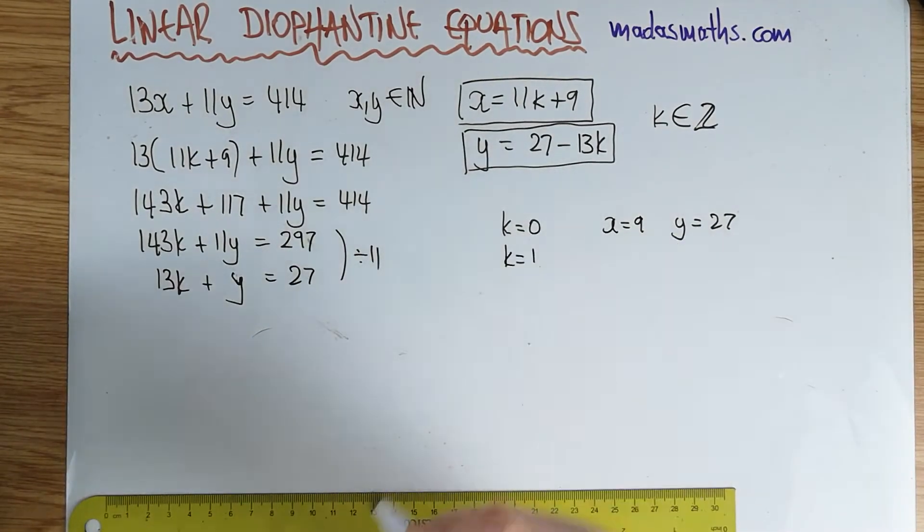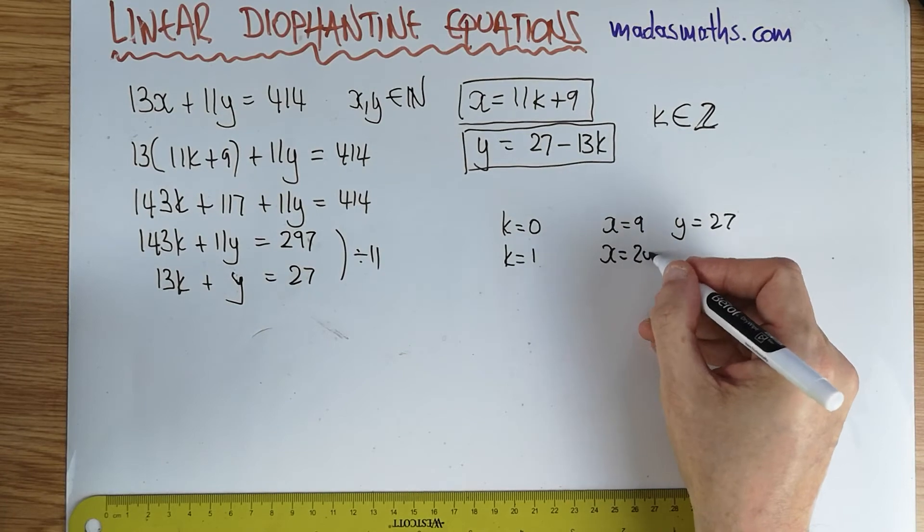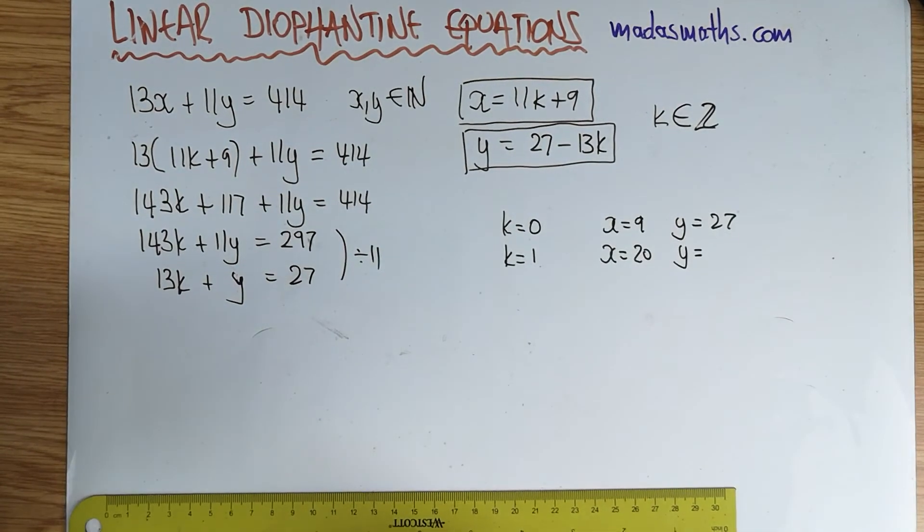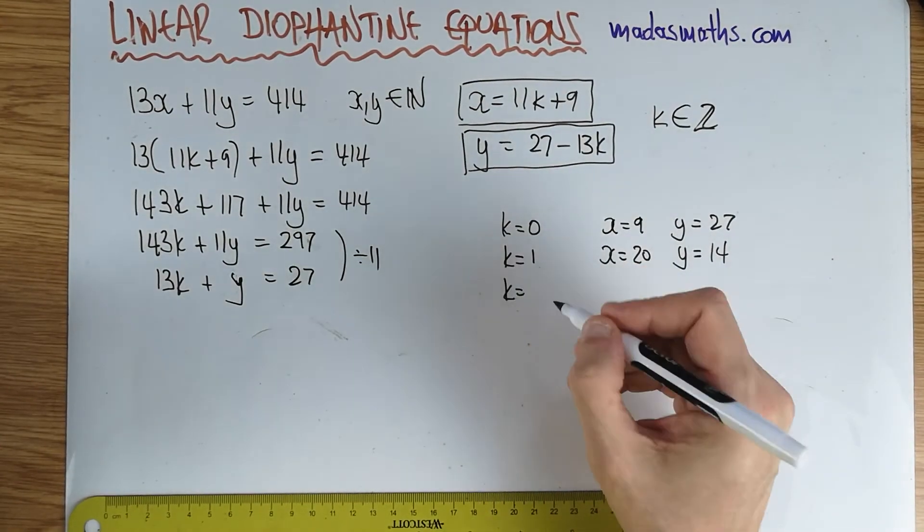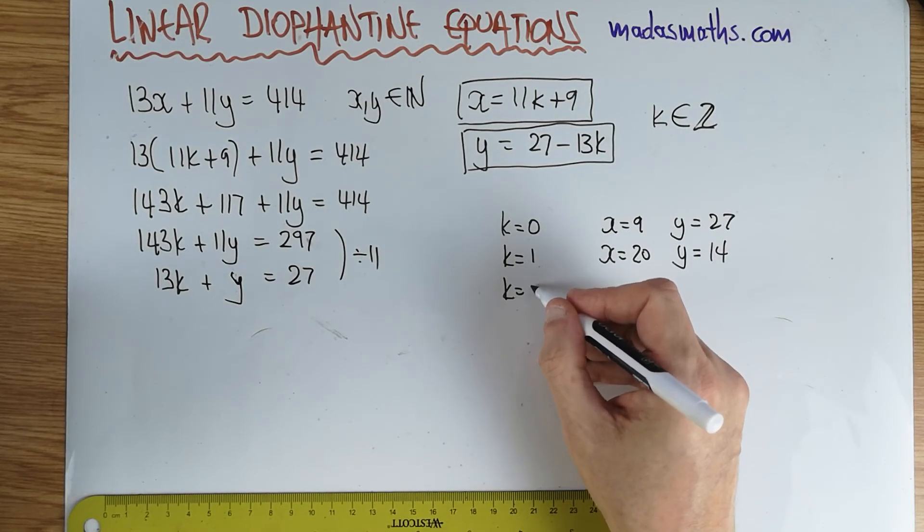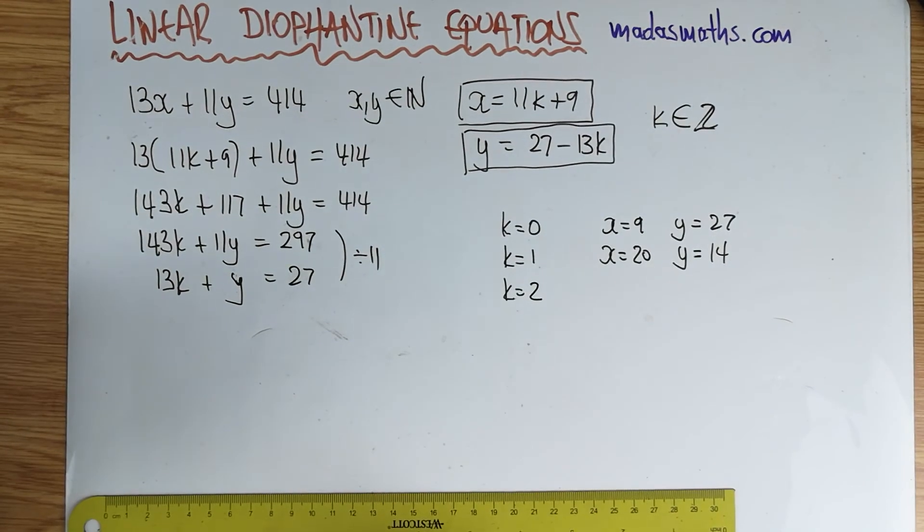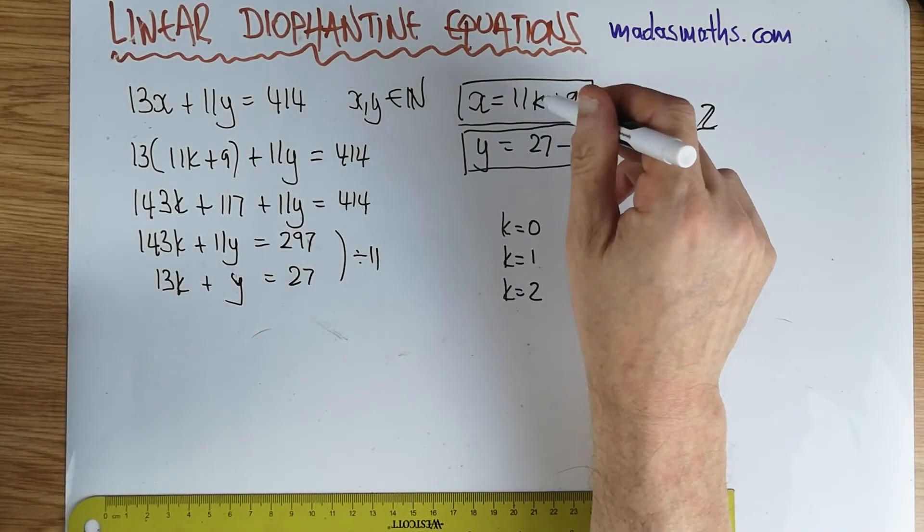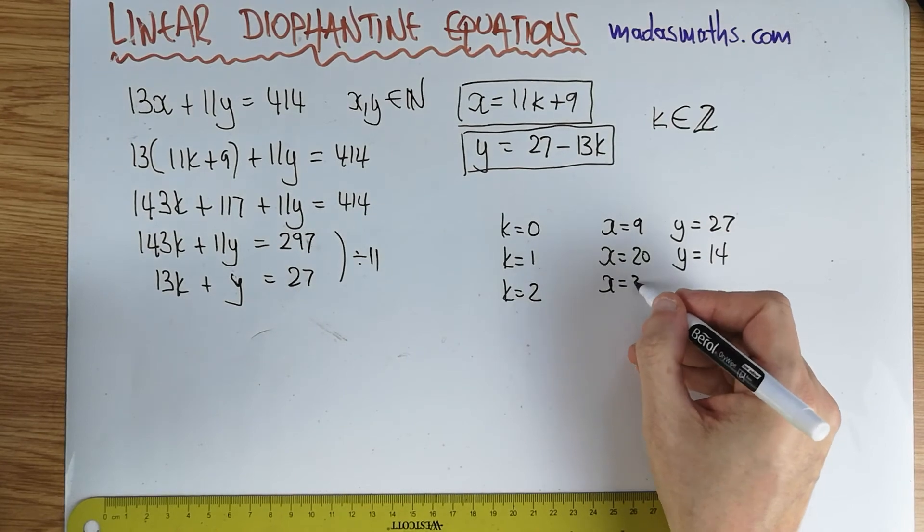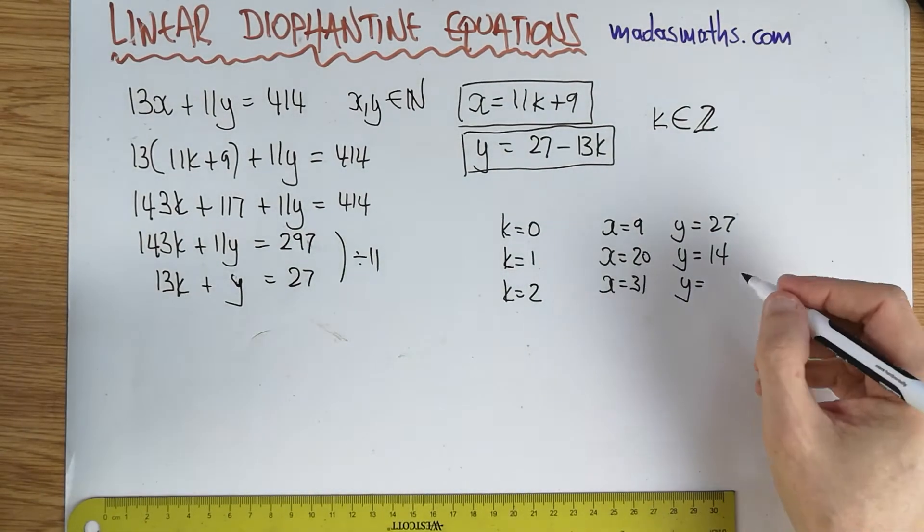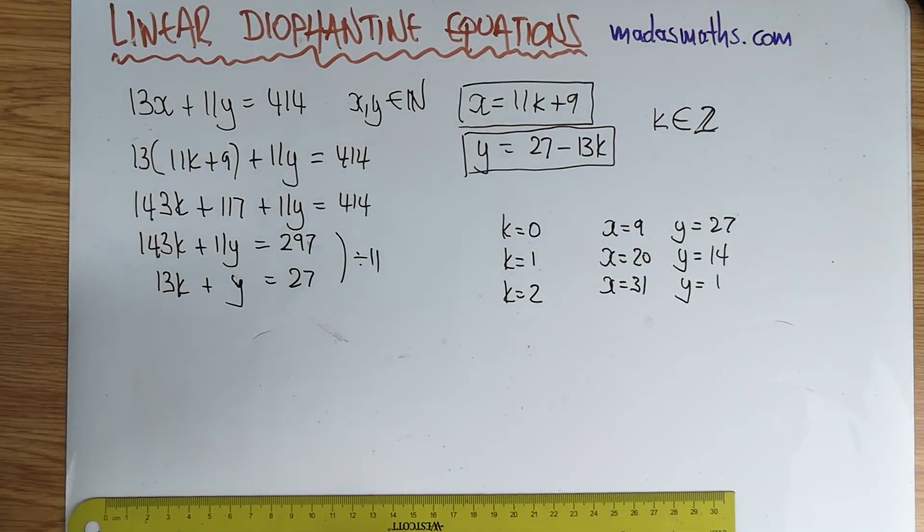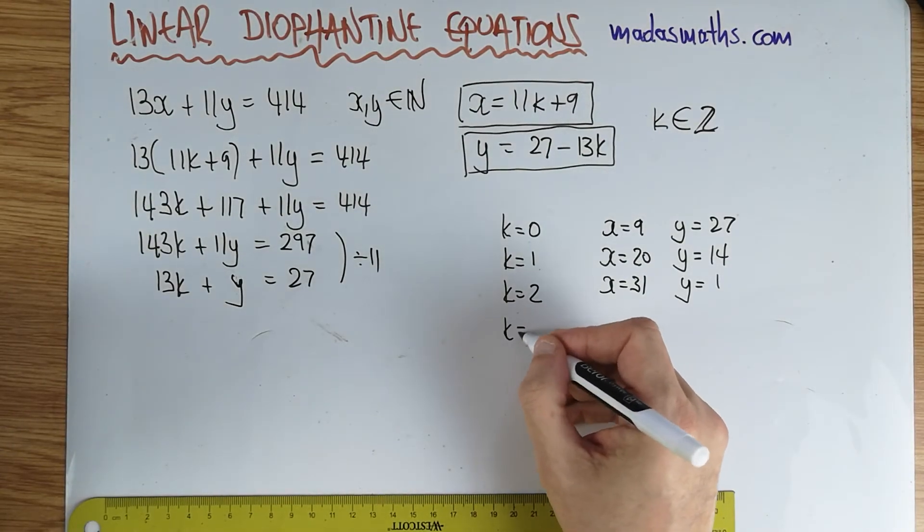Then what about k equals 1? x will be 20, and y will be equal to 14. That's 22 plus 9, x equals 31, and y will be now 27 minus 26, so y equals 1, and there's no more solutions because when we put k equals 3, it doesn't work again.